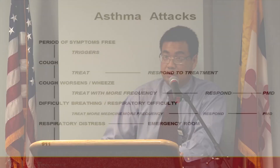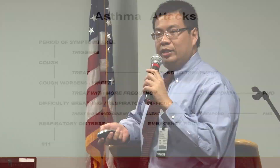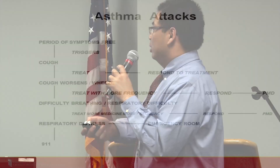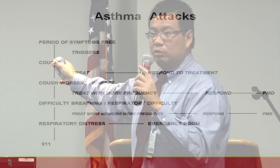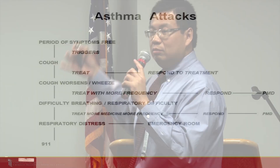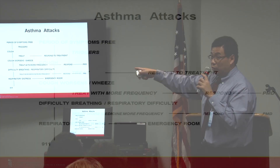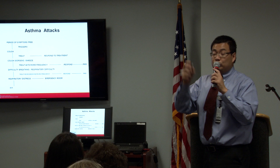During an asthma attack: usually the child is symptom-free, then a trigger develops, they develop a cough, and you treat with a short-acting beta-agonist. If they respond, great — but still see your primary care doctor to let them know there was an attack. If they don't respond, the cough gets worse, they wheeze, you treat with more frequency. If they still don't respond, go to the emergency room. If they are in severe distress, call 911 — do not put your child in a car seat and drive to the hospital yourself.